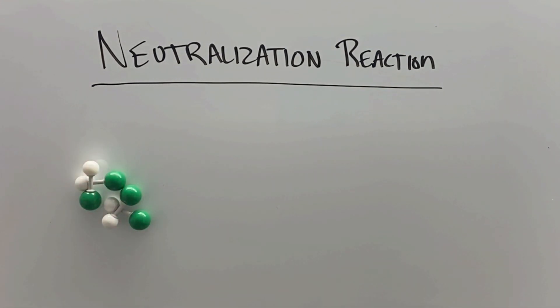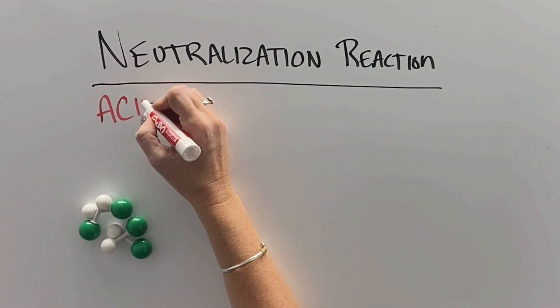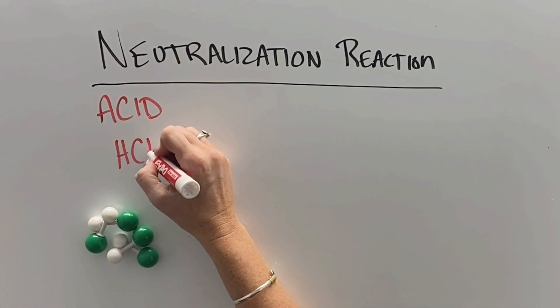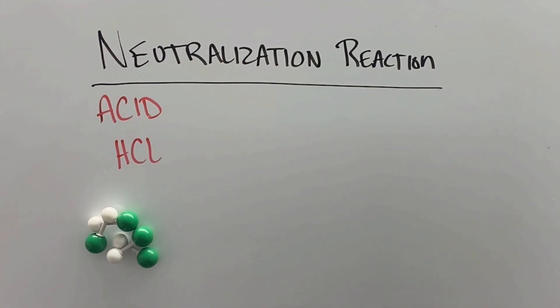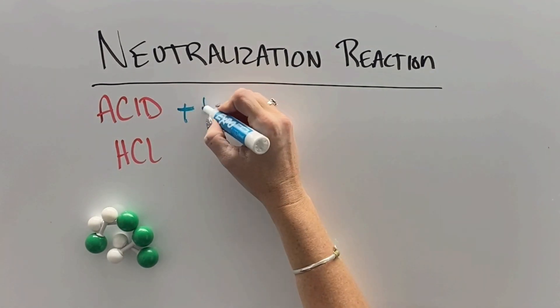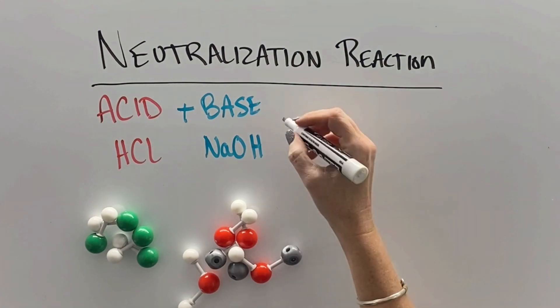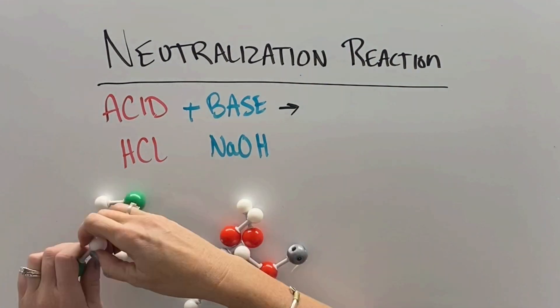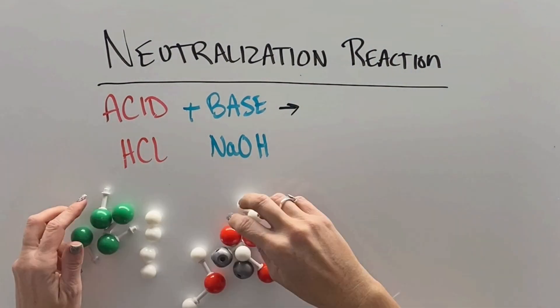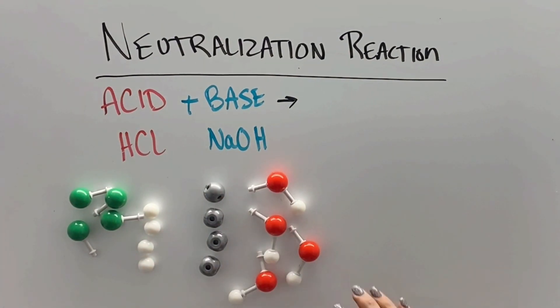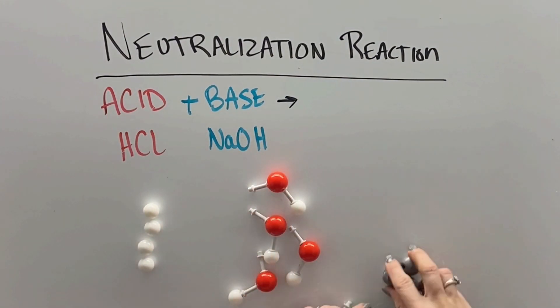During a neutralization reaction, we take an acid like hydrochloric acid, which is hydrogens attached to chlorines, and a base, which is a metal attached to hydroxide, like sodium hydroxide. When we place them into a container with each other, the hydrogens detach from the acid and the OHs detach from the base.